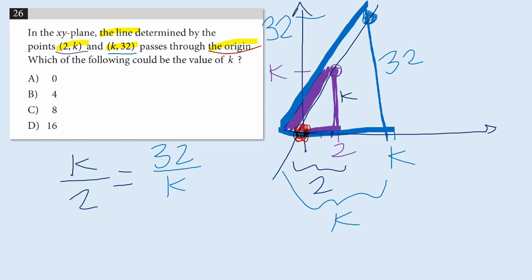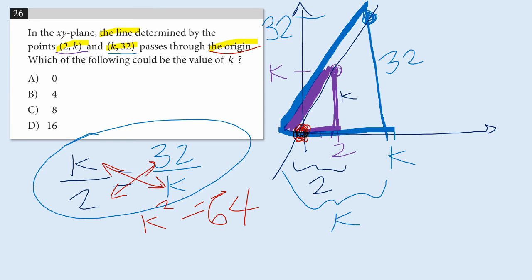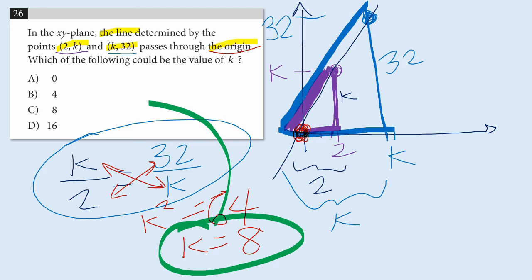Well, now all we have to do is solve this. I can cross multiply. K squared is going to equal 2 times 32, which is 64, which means that k is equal to 8. And what do you know? Once we found that value, we immediately see that C is the right answer.